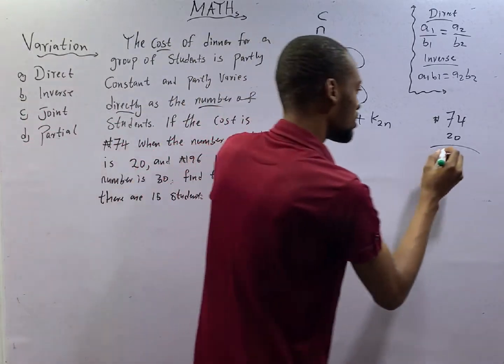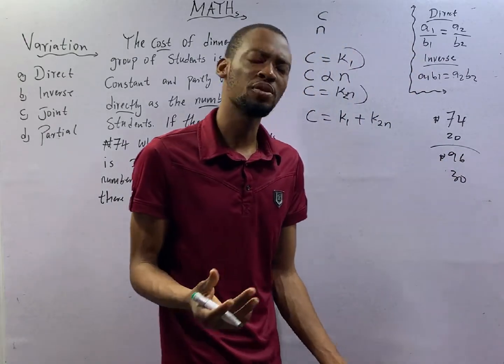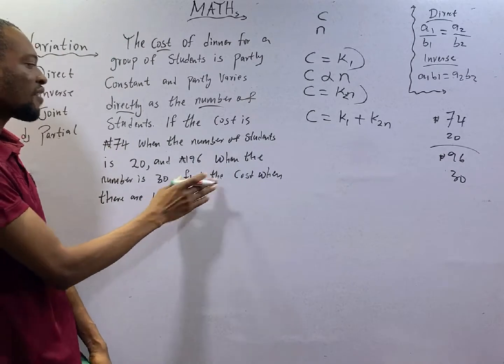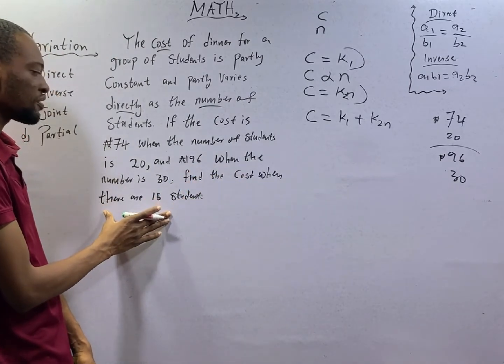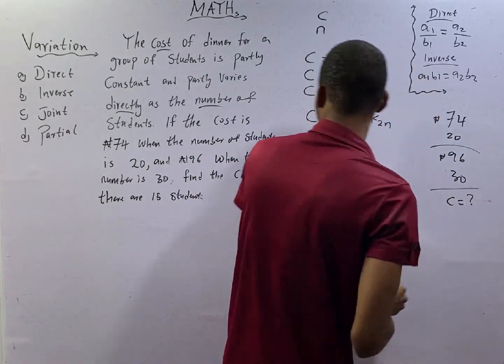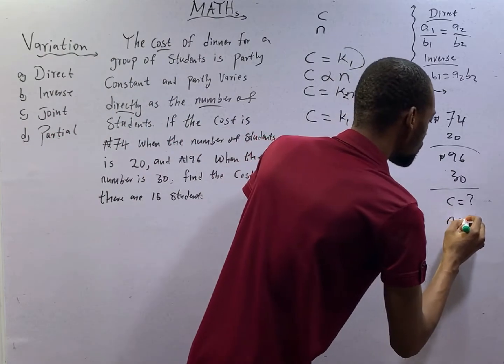Variation will always be variation, comparing quantities. Now, it says find the cost when there are 15 students. This time around, we are looking for cost and the number of students equals 15.